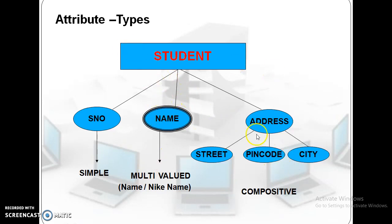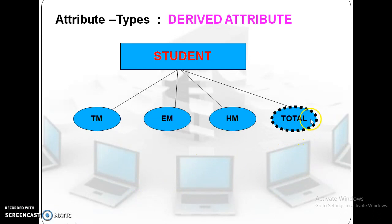And this is called a composite attribute. The composite attribute is divided into a number of multiple attributes. These are called a derived attribute. Derived attribute derives values from the other attributes. These are denoted with dotted ellipse lines.